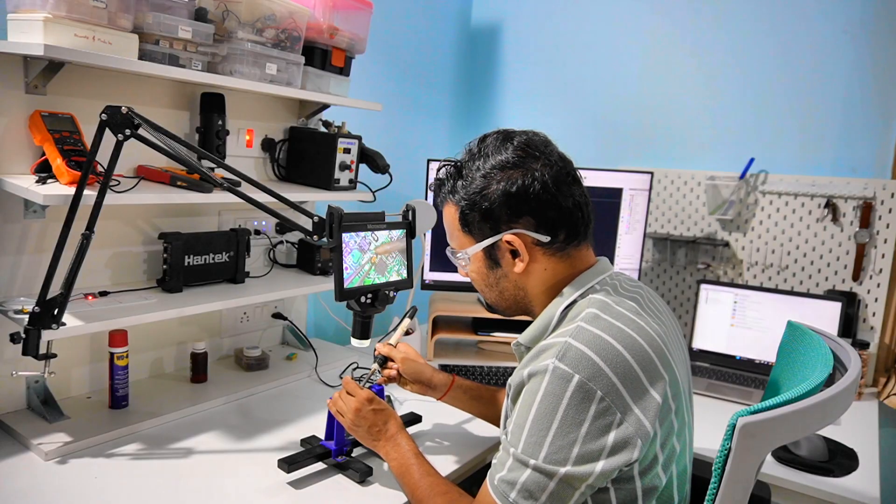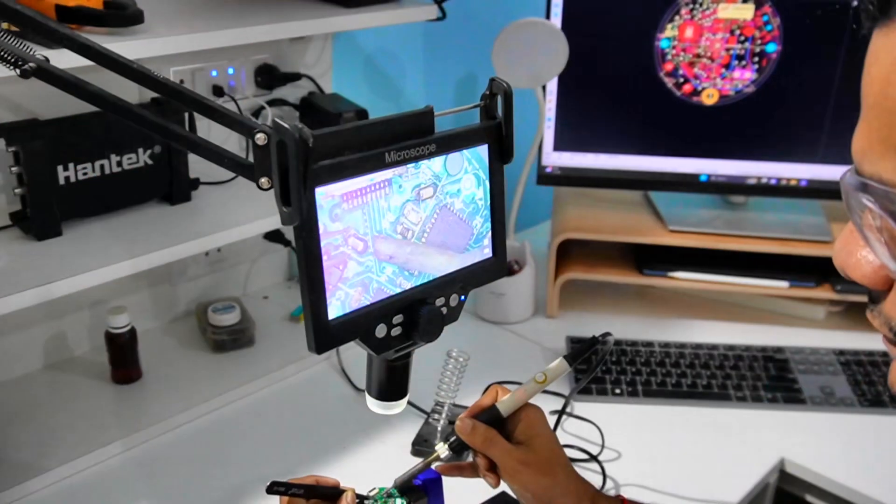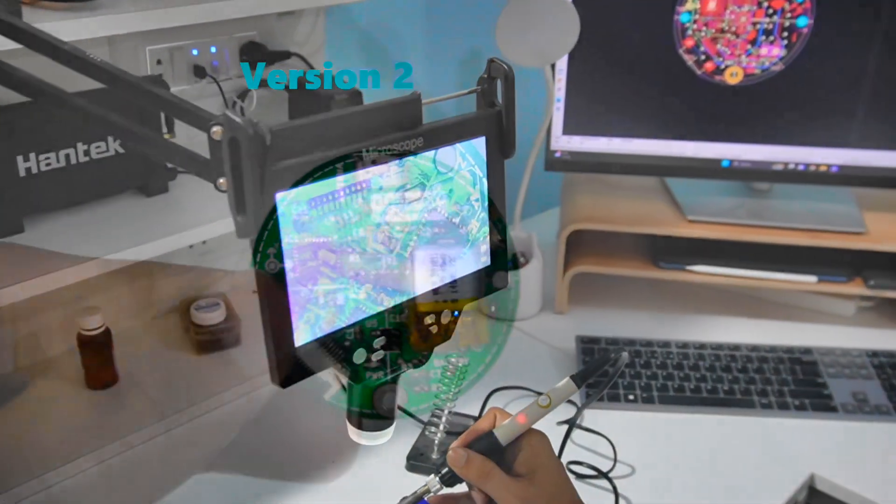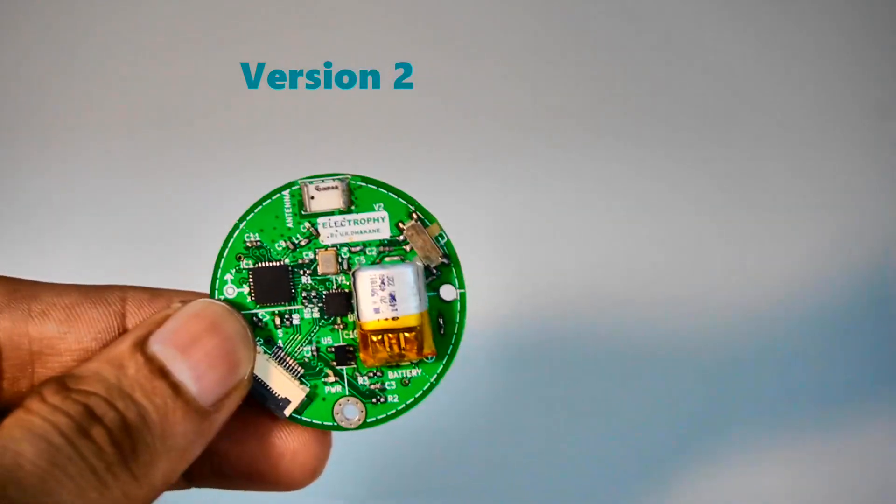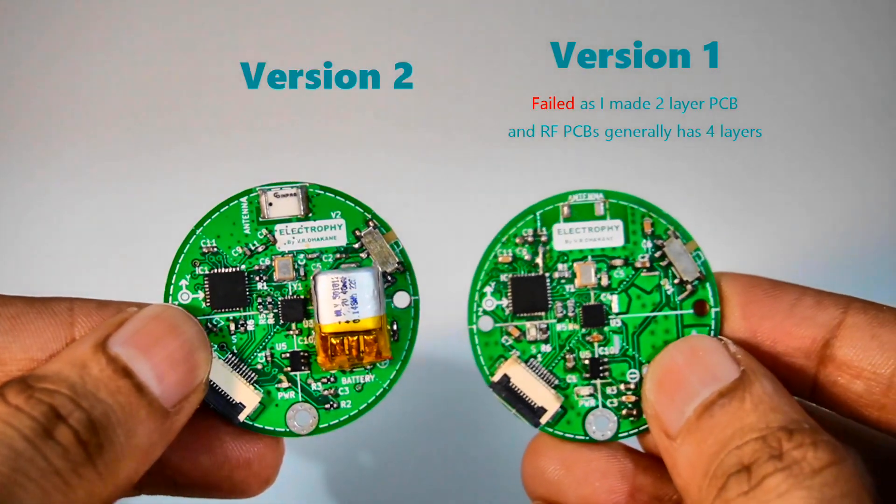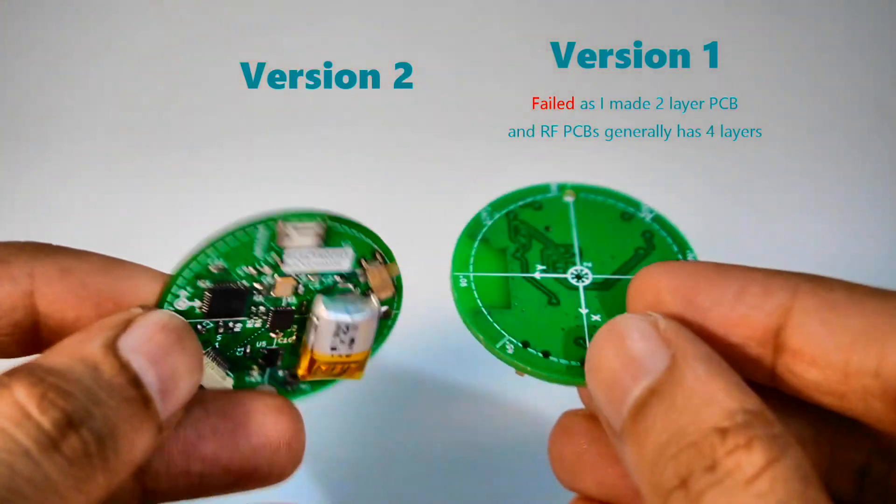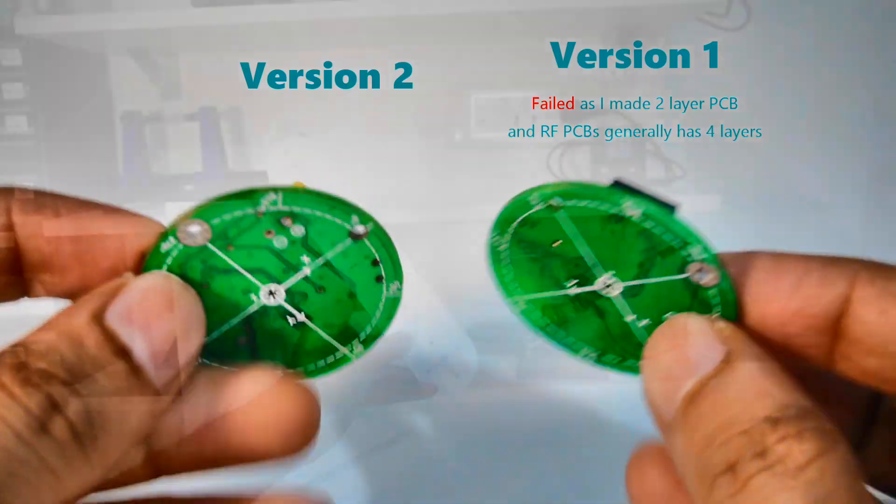The PCB was designed using KiCad software, then manually soldered together to bring Electrofy to life. Although it sounds straightforward, my first version didn't work as expected, mainly due to my lack of experience in RF PCB design. However, the second version is functioning well.